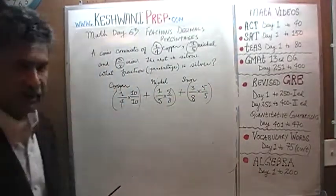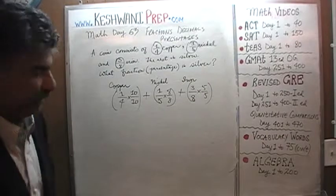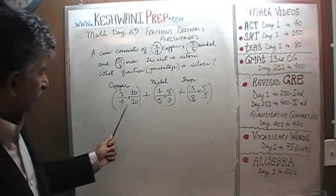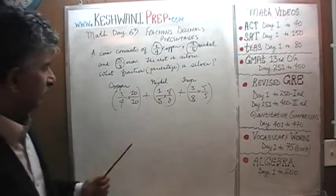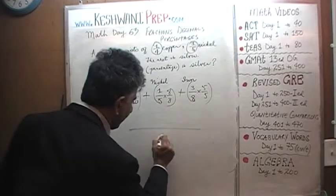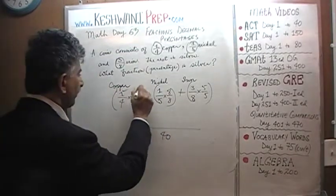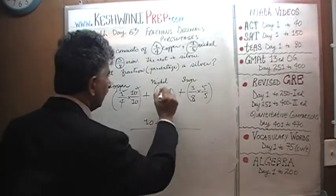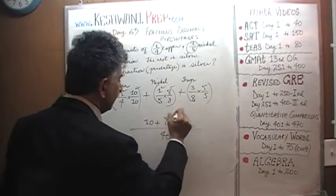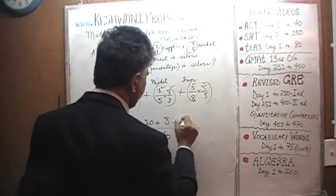Now we simply add them up because they all have the same denominator of 40. 4 times 10 is 40, 5 times 8 is 40. 1 times 10 is 10, plus 1 times 8 is 8, and 3 times 5 is 15.